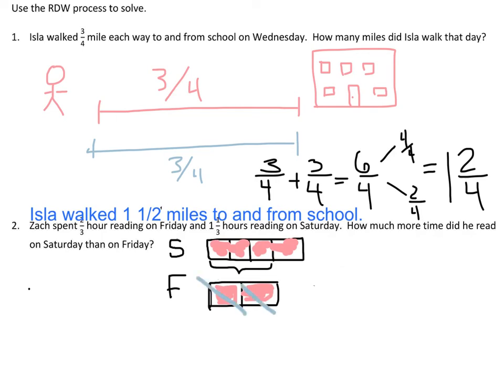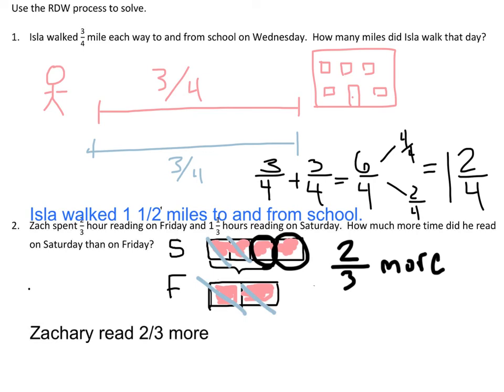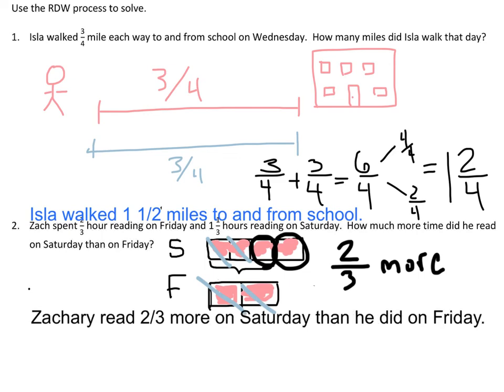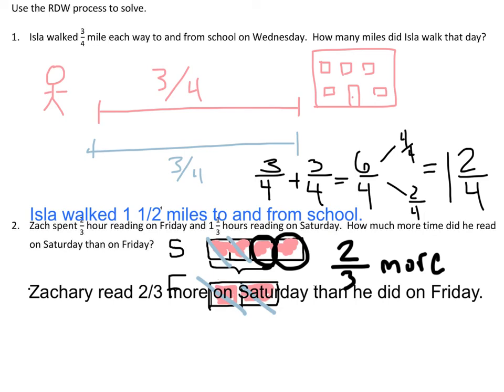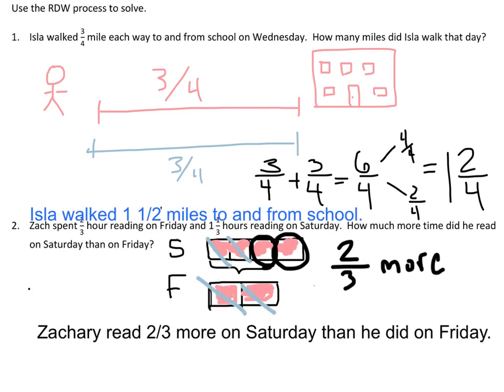All right, so this is two-thirds against one whole and one-third. So these two cancel out these two, but what's left over? There are still one-third and one-third left over. So on Saturday he read two-thirds more. Or as a statement, Zach read two-thirds more on Saturday than he did on Friday.